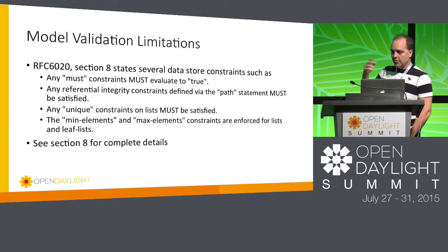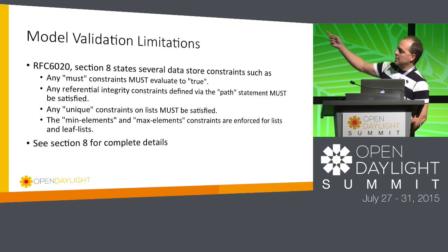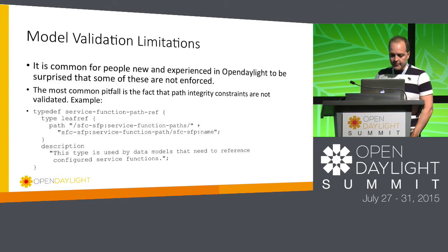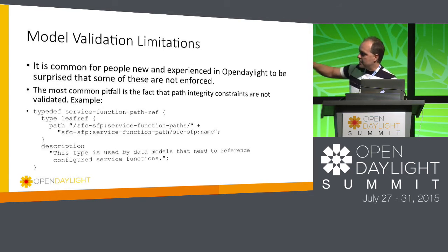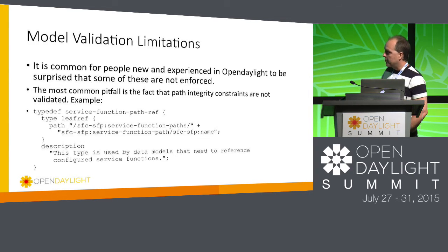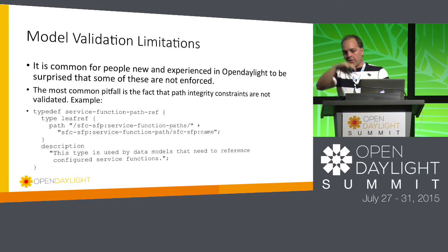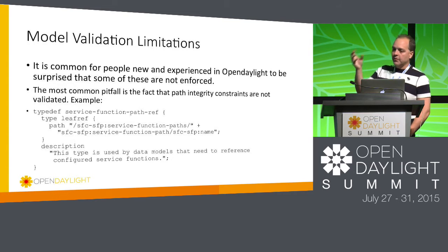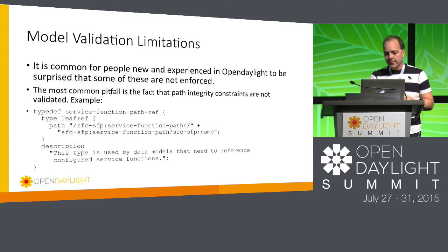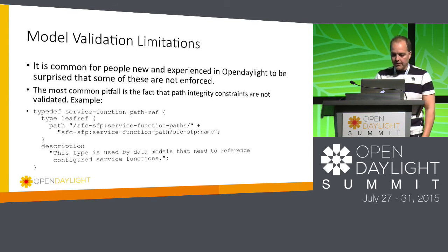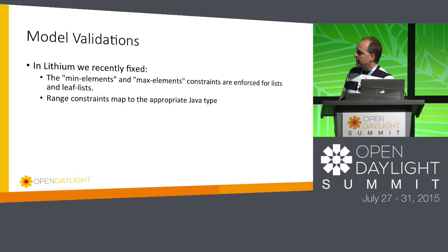The most common pitfall is that path integrity constraints are not validated. In the service function chaining example, you can completely remove a path with devices in it, even though you should not be able to. This is handled in the SFC code. As validation improves, this application-level validation will hopefully no longer be needed. In Lithium, some things were fixed — for example, minimum elements and maximum elements constraints on Yang lists are now enforced.